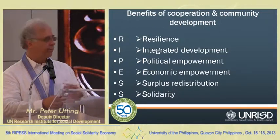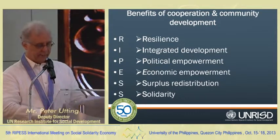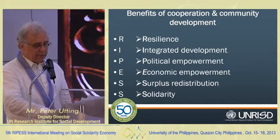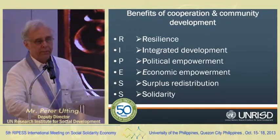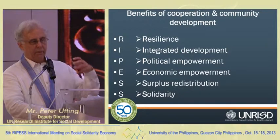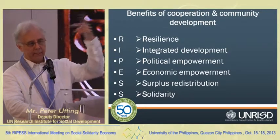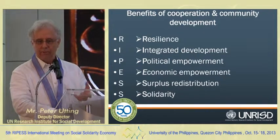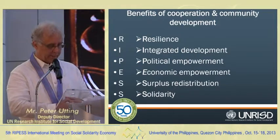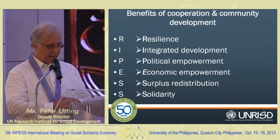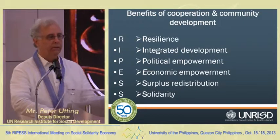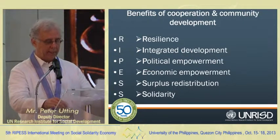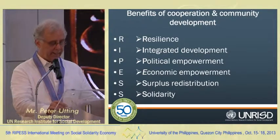Small producers are usually at a serious disadvantage when integrating in market relations and value chains. The S is for surplus redistribution for the community — instead of the surplus generated leaving the country, or going into shopping malls or housing bubbles, it's reinvested in the community for community development. The final S is for solidarity — by coming together, you enhance your ability to help others in need.